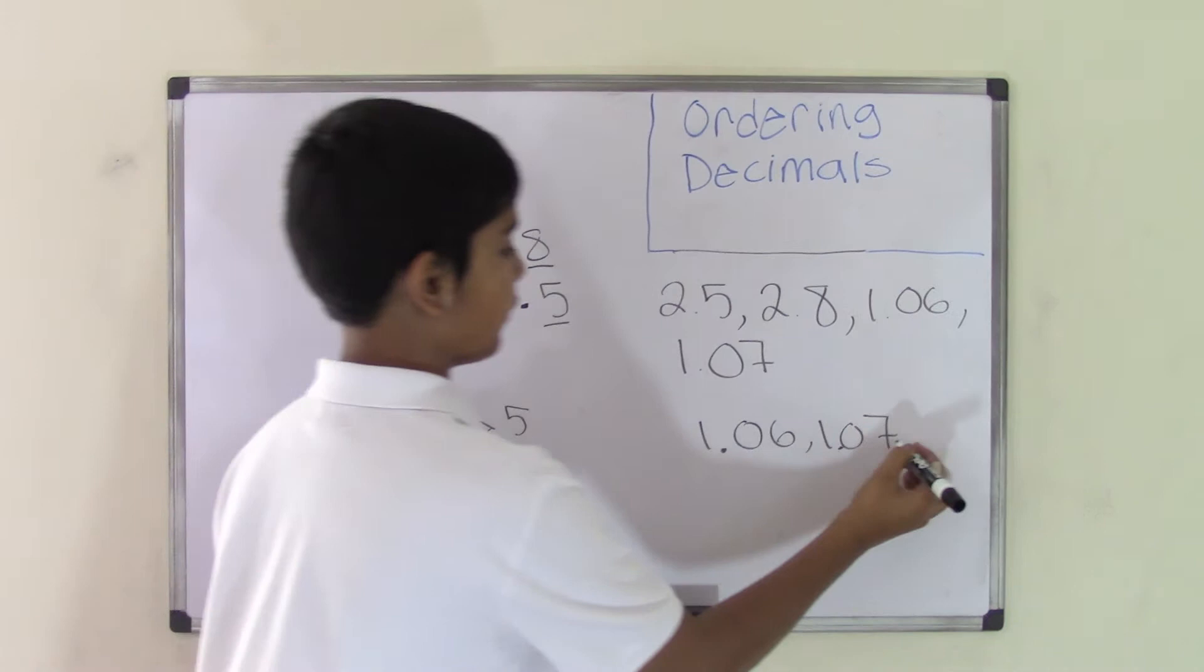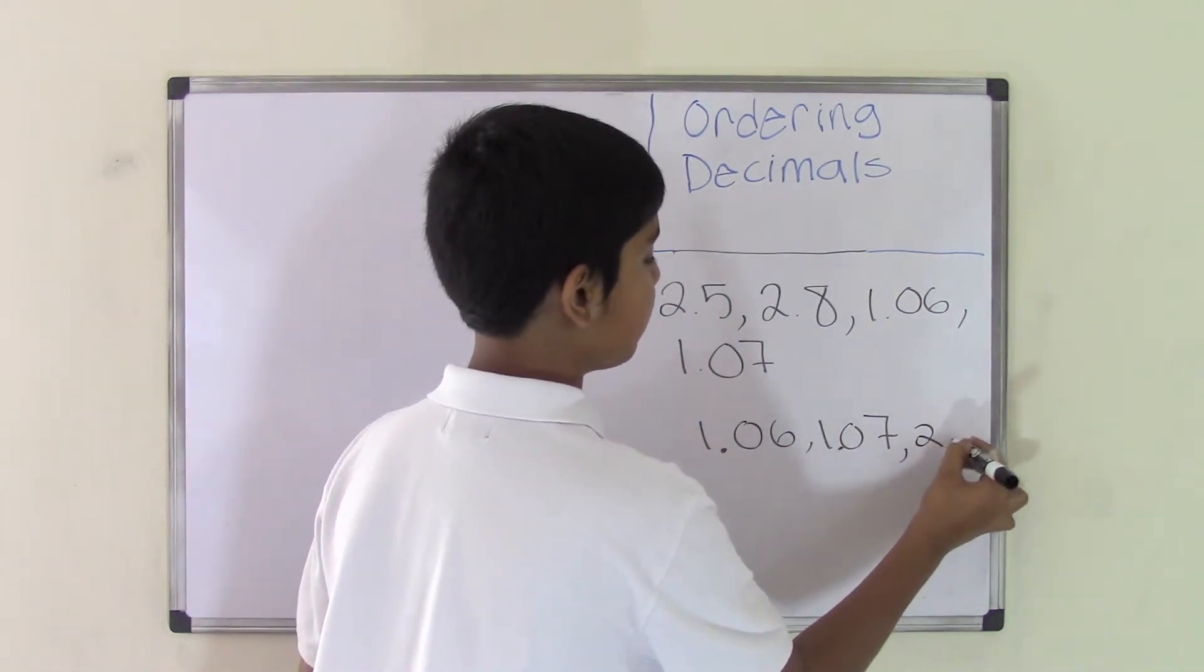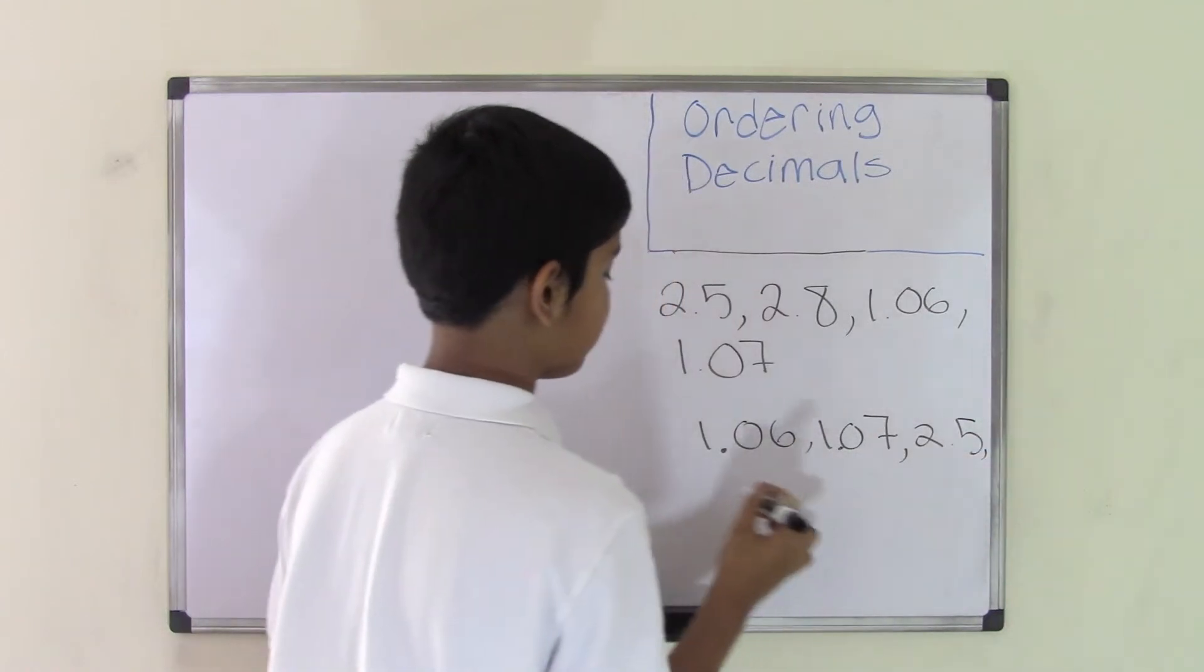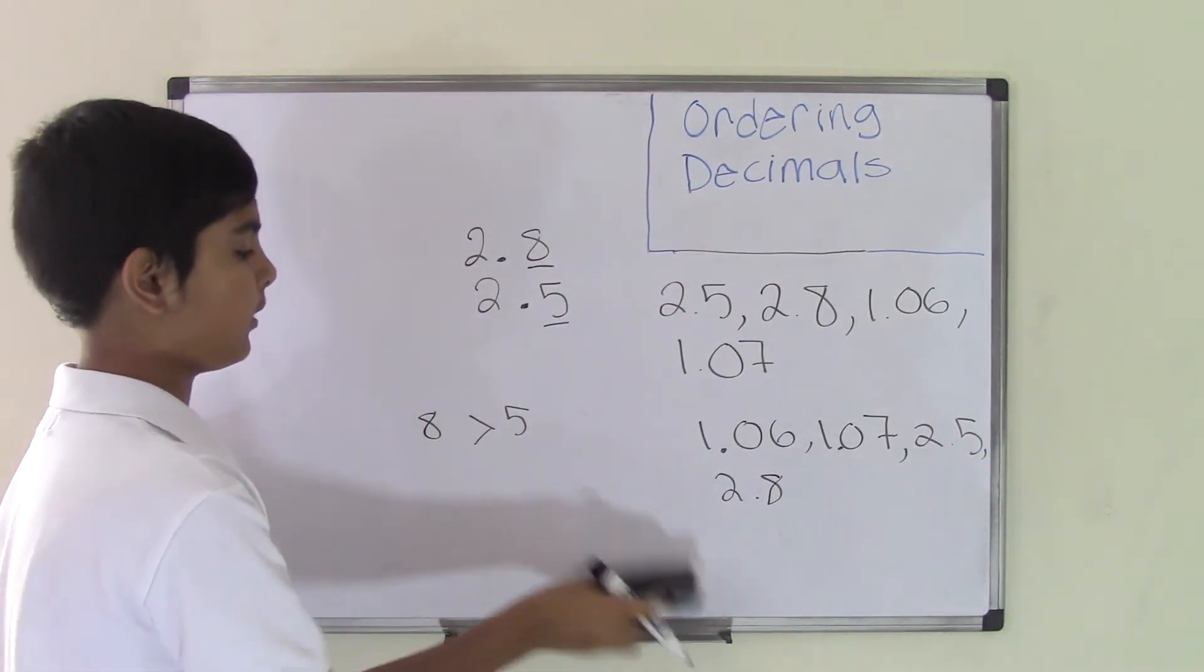We know that 8 is greater than 5, so 5 is less, so it will go third: 2.5. And then at the end we will write 2.8 because it's the greatest of them all.